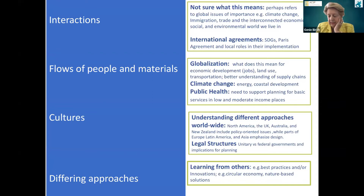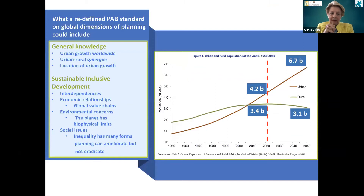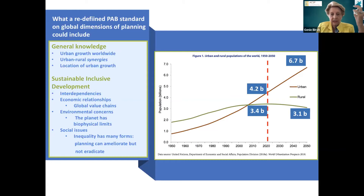However, since Ed has said the PAB is reviewing its standards, I think it's time to think about what a redefined standard of global dimensions of planning could include. First of all, you would think we want our students as urbanists to have a general knowledge of what's happening in the world with regard to urbanization — where the growth is, what the synergies are between urban and rural activities, which is a very hot topic, and the location of urban growth. Secondly, we do stand for sustainable, inclusive development. What is it that our students could know about this that's global?